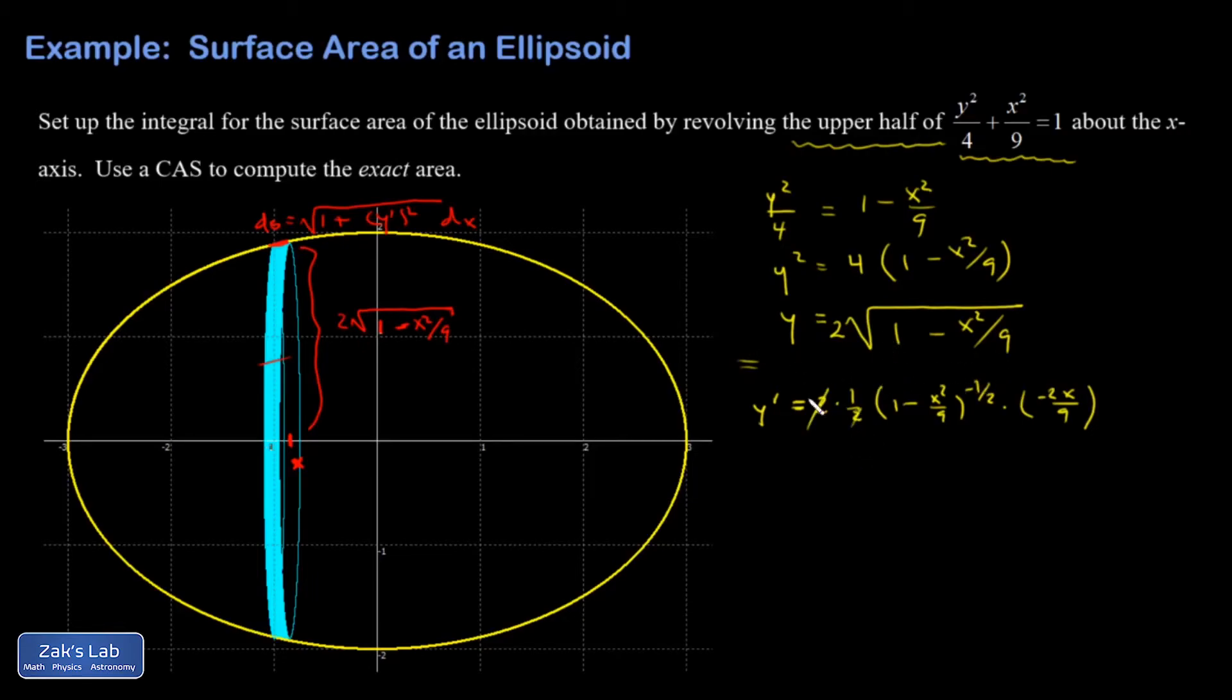And the 2s are going to cancel out there, and I end up with negative 2x over 9. And then I'm going to move this piece into the denominator. Negative 1 half power means 1 over the square root, so 1 minus x squared over 9. So then y prime squared, I may as well write that separately. Y prime squared is going to be 4x squared over 81 times the quantity 1 minus x squared over 9. That's just my little ds, or part of the inside of the little ds piece. So I suppose I could write ds here. It's going to be square root 1 plus that thing I just calculated, so 4x squared over 81 times 1 minus x squared over 9 dx.